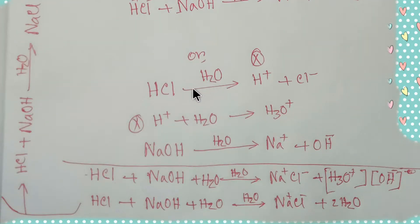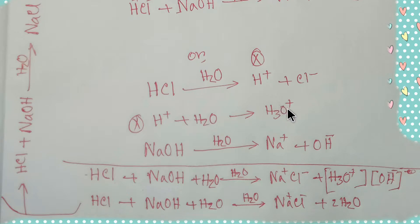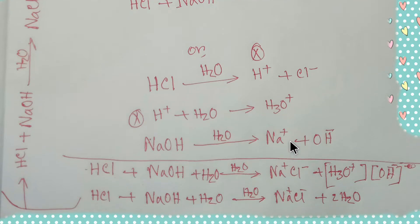In the second mechanism: in water, HCl produces hydrogen ions and chloride ions. This hydrogen ion will attach to a molecule of water, so we get H₃O⁺. And sodium hydroxide in water produces sodium ions and hydroxyl ions.